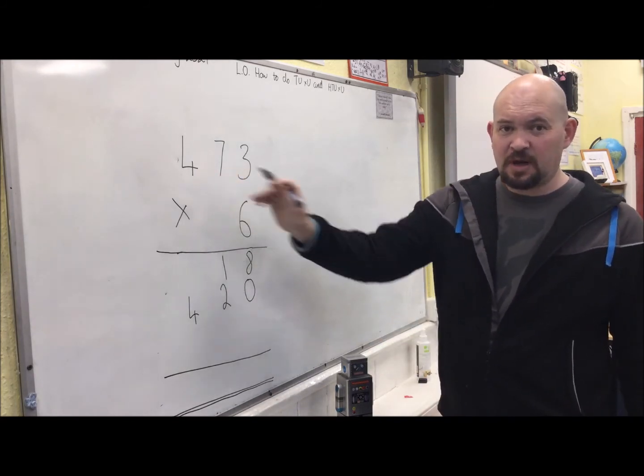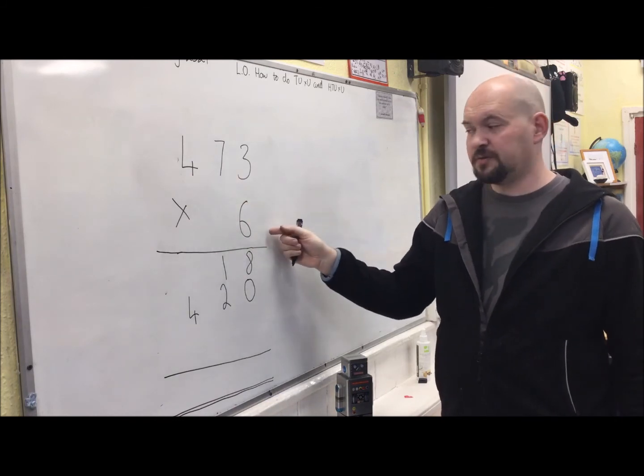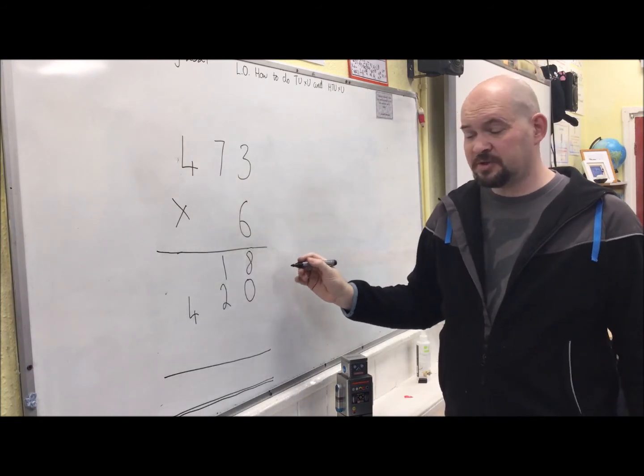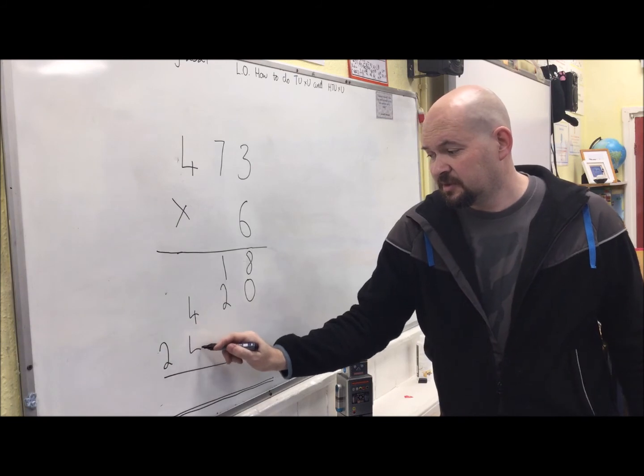And then finally 6 times 4, I know that's 24. So 6 times 40 would be 240. So 6 times 400 would be 2,400. So I've got thousands to add in this time. 2,400.